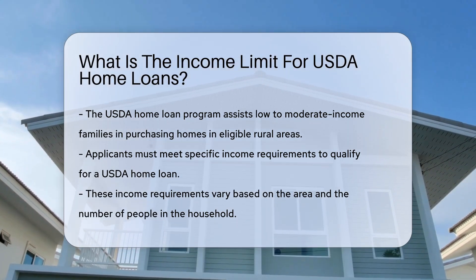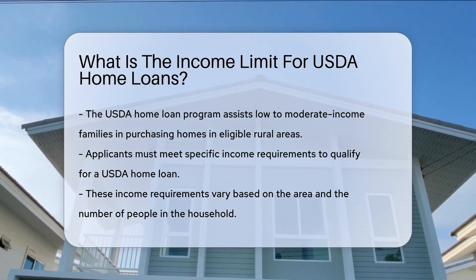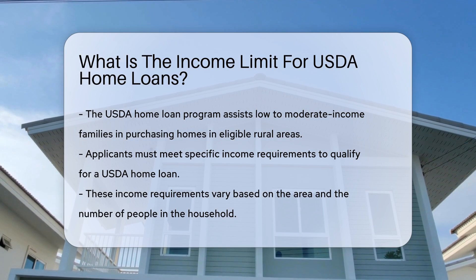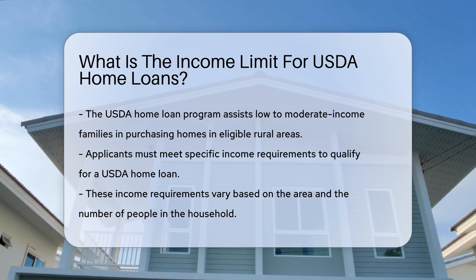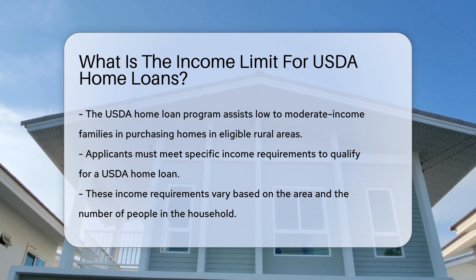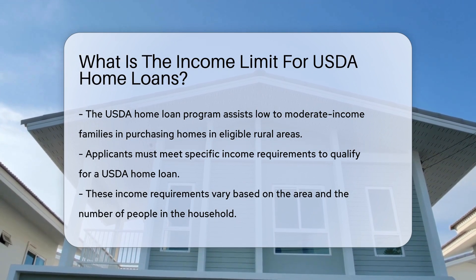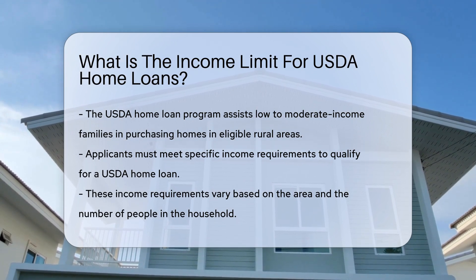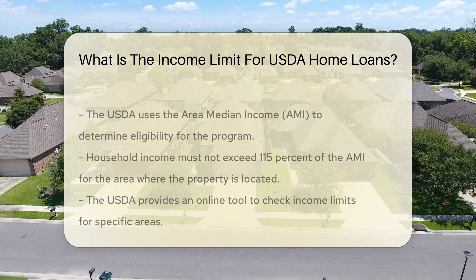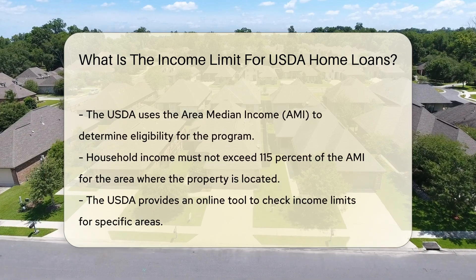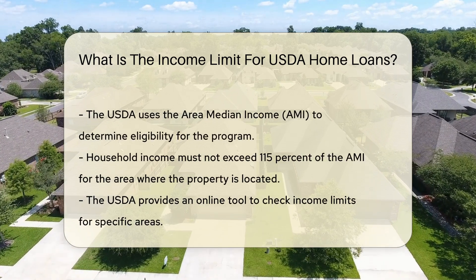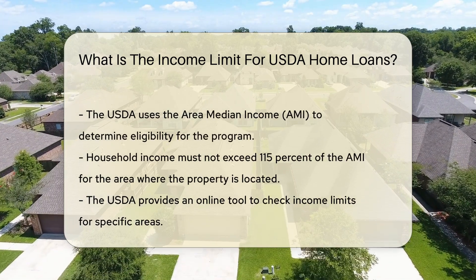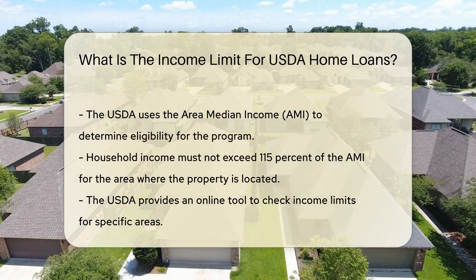These requirements vary based on the area and the number of people in the household. The USDA uses the Area Median Income (AMI) to determine eligibility. Household income must not exceed 115% of the AMI for the area where the property is located.